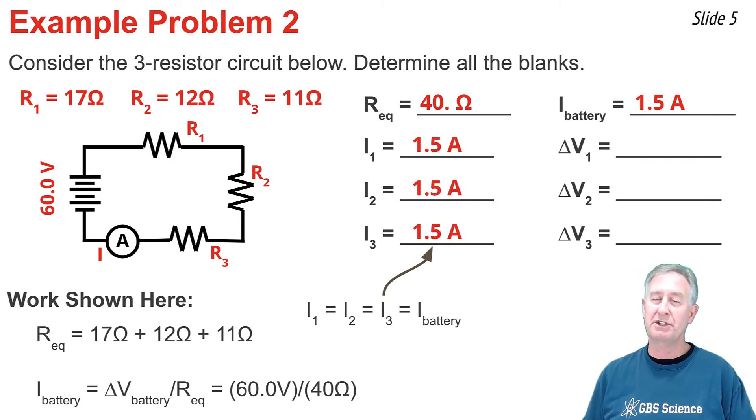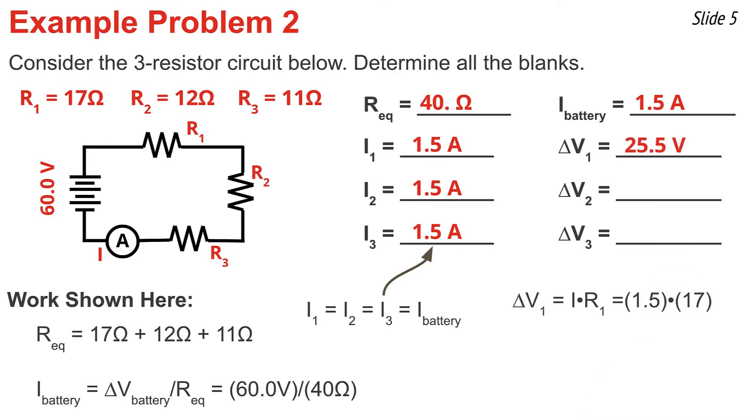With the currents in every resistor now known, and the resistance values given, I can calculate the voltage drops across each of these resistors. For resistor number one, I'm going to go 1.5 times 17, and that's 25.5. For resistor number two, I'm going to go 1.5 times 12. That comes out to be 18. And for resistor number three, 1.5 times 11 comes out to be 16.5.